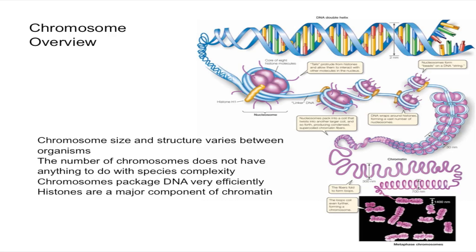There are 5 major types of histones, and they are very similar between organisms — two very different organisms will only differ by a little bit in their histones. These histones are positively charged, with many positively charged amino acids that allow them to bind to the negatively charged DNA.